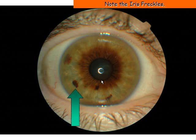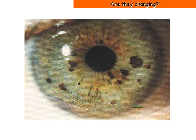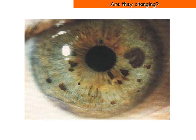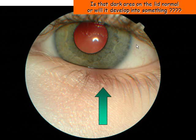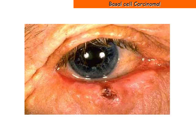In this image, note the iris freckles. Are they changing? Is that dark area on the lid normal or will it develop into something? From the image previously shown, this could be the dark spot on the eyelid.